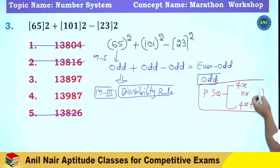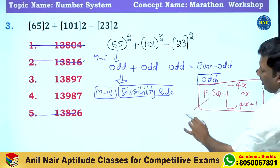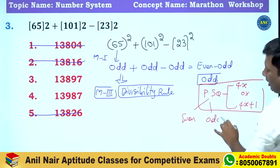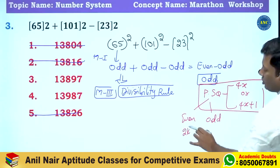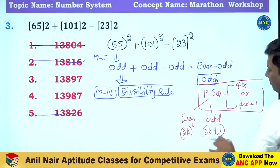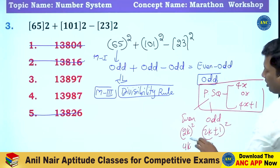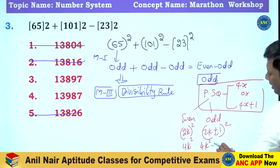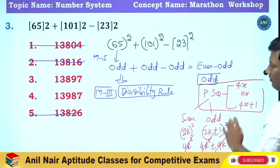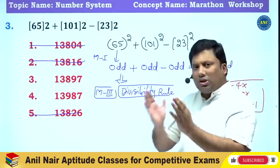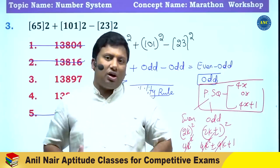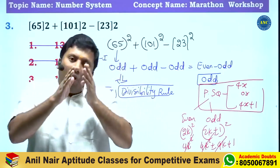Any perfect square will either be of the form 4k or 4k+1. From where do we get this? Any natural number is either even (2k) or odd (2k±1). Squaring: even gives 4k², which is divisible by 4; odd gives 4k²±4k+1, which is of the form 4k+1.